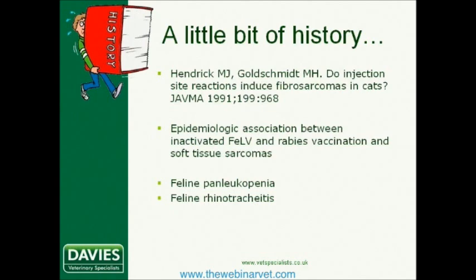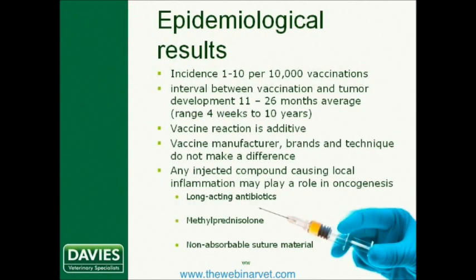Over the next four to five years, multiple studies produced and reported strong evidence supporting the suggestions made in Hendrick and Goldschmidt's original paper, associating the administration of inactivated feline leukemia virus and rabies vaccines and the subsequent development of soft tissue sarcomas at vaccine sites. Similar reports also suggested associations with feline panleukopenia and the feline rhinotracheitis vaccine administration. Those epidemiological studies provided much of what we know today, although even now, 25 years on, work is still being carried out.